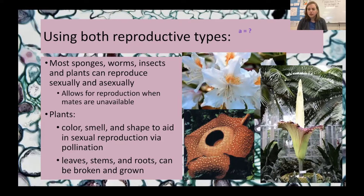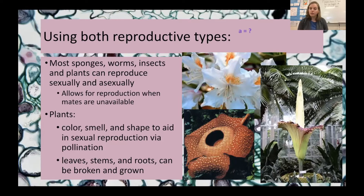Sexual reproduction is slower because it requires finding a mate. Plants use color, smell, and shape to attract pollinators to take pollen from one plant to another and pass on genes that way. That takes a little while longer because you have to find the mate and get DNA from one individual to the next.